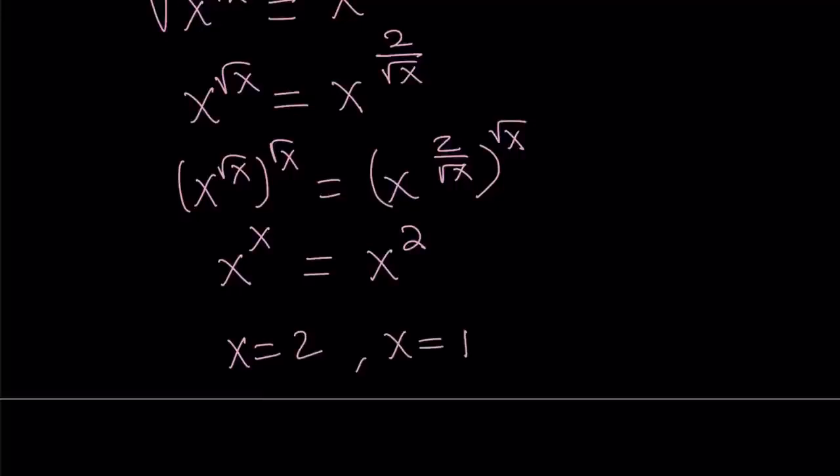If you think about the graphs of x to the power of x, it kind of starts at 0, but obviously it's not well defined at 0. It kind of goes down and then it starts going up.